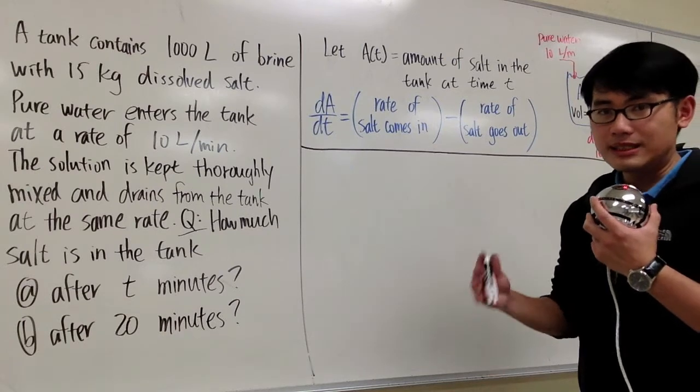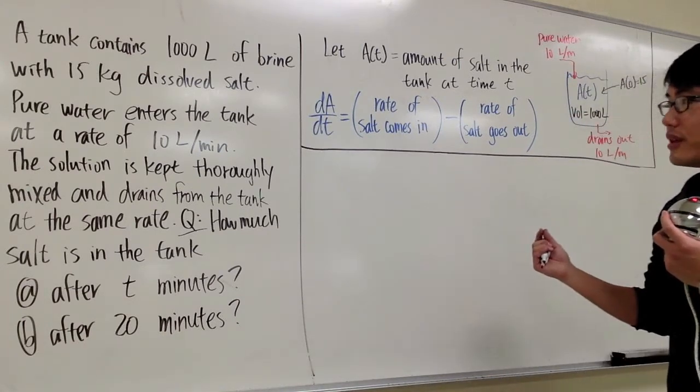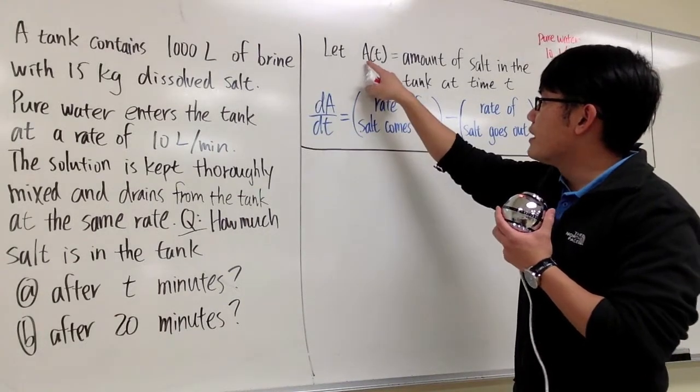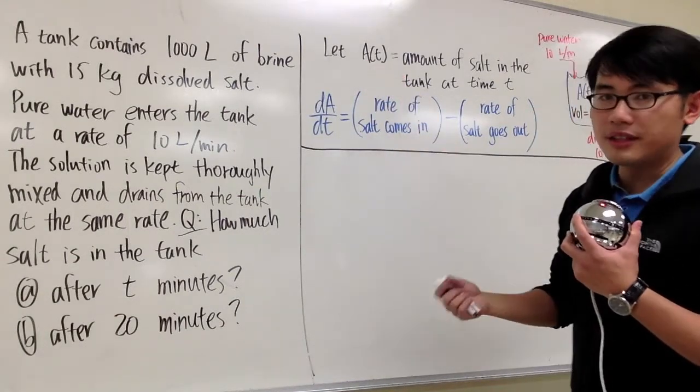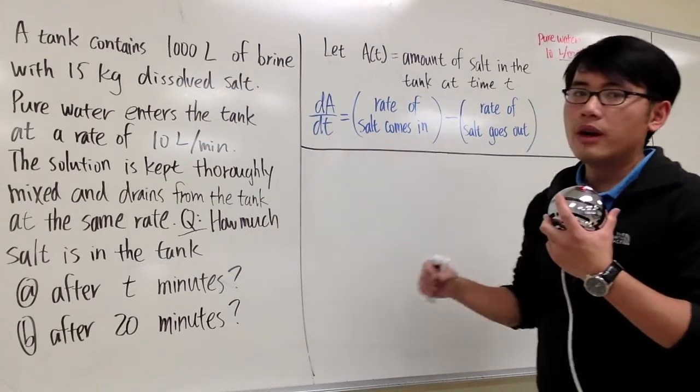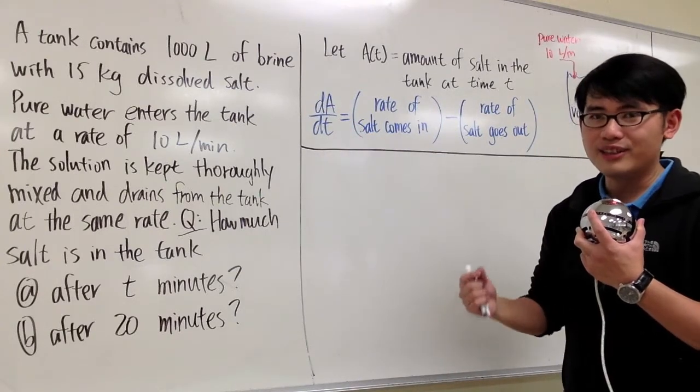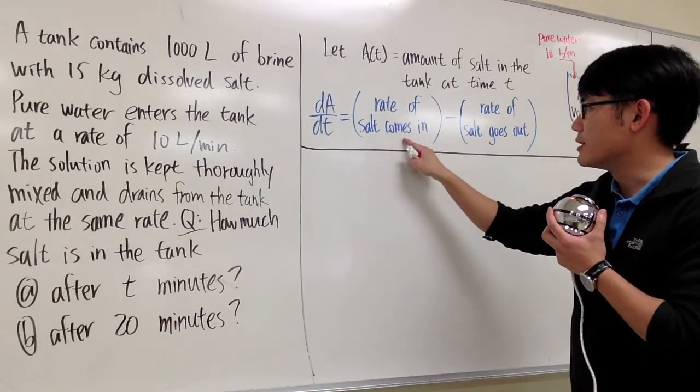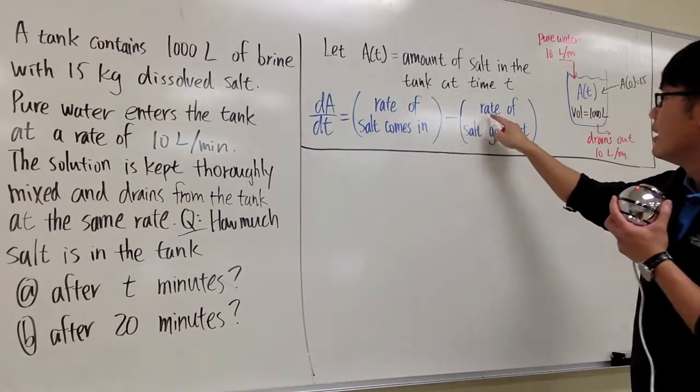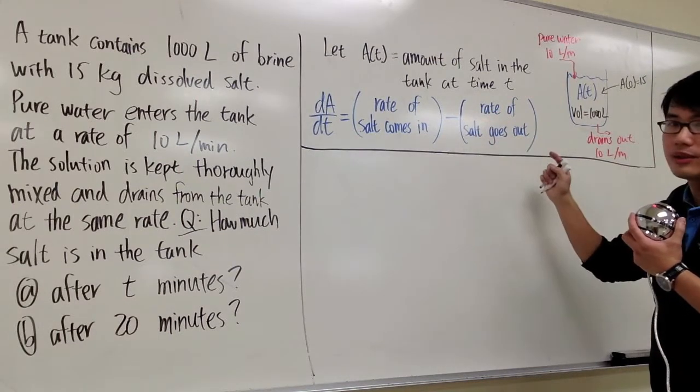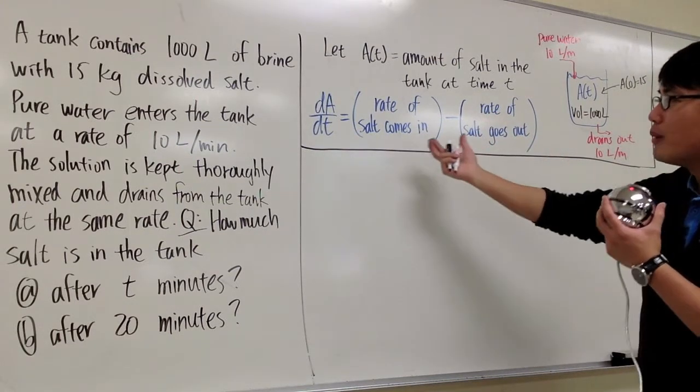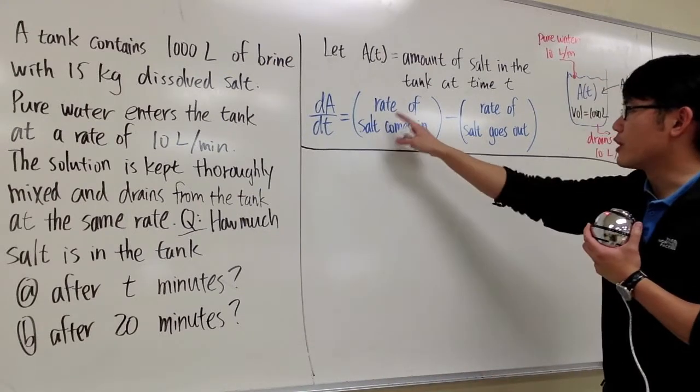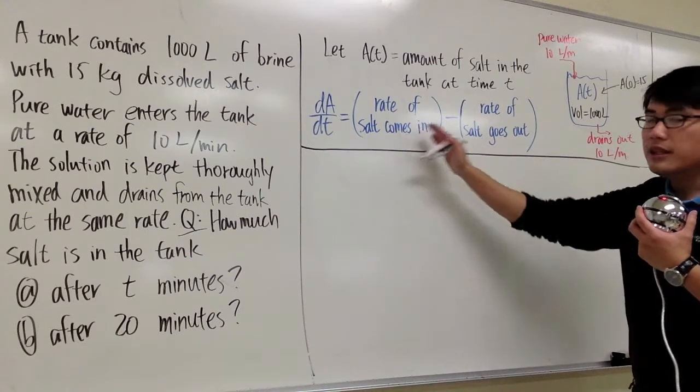And now we are going to come up with a differential equation to model the situation. And this is the key point. If, once again, A of T to be the amount of the salt in the tank, then dA dt stands for the rate of change of the salt in the tank. Well, what should it be? It should be the rate of the salt comes in, and then subtract the rate of the salt goes out. The difference between how much salt that comes in and how much salt it's been losing out. And we are talking about the rate. So these are the idea.